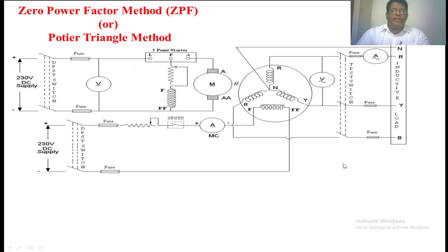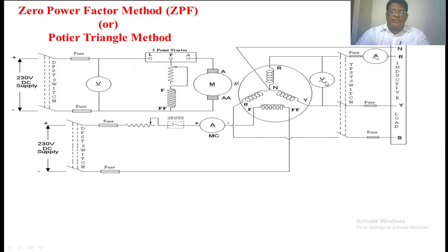This is the circuit diagram to find the voltage regulation of the alternator. This is the stator winding, this is the field winding. Here we have three terminals connected to the DPST switch. Through the DPST switch, an inductive load is considered. Here we have kept one voltmeter and one ammeter to measure current as well as voltage.